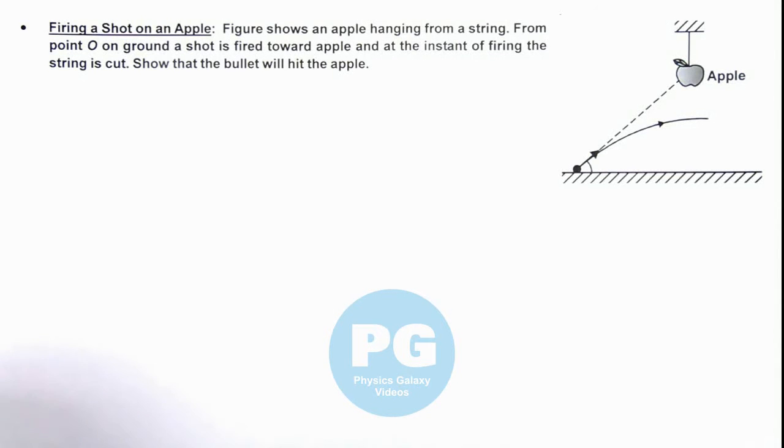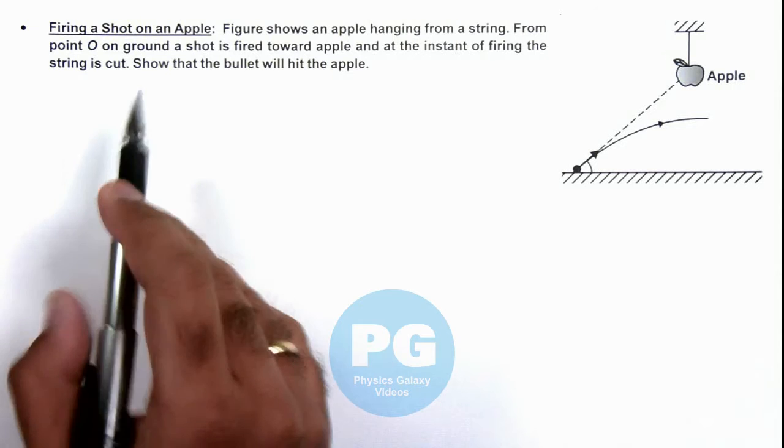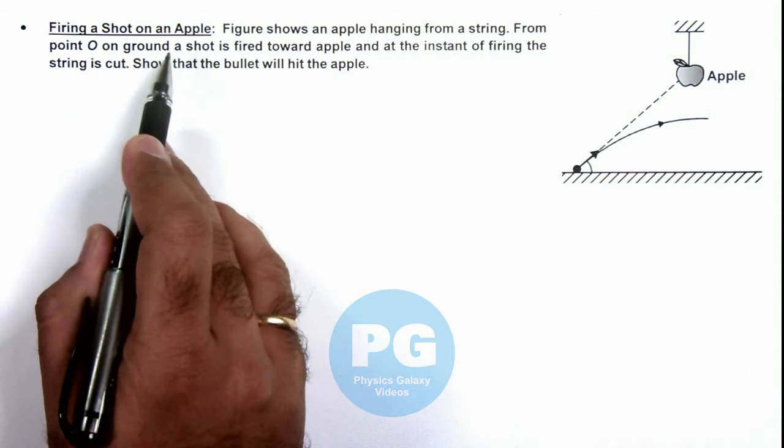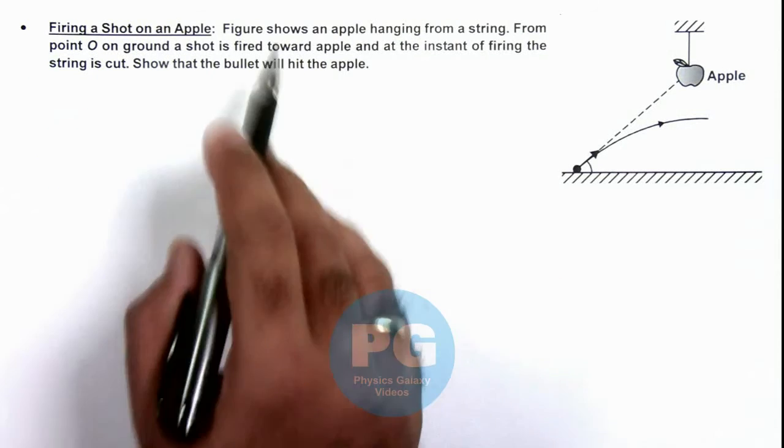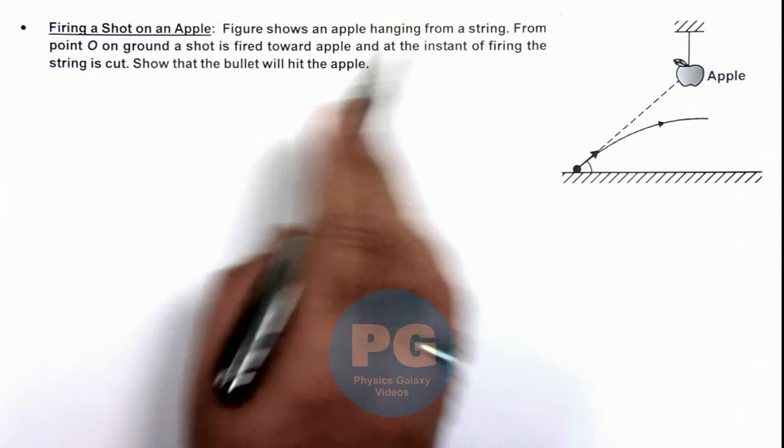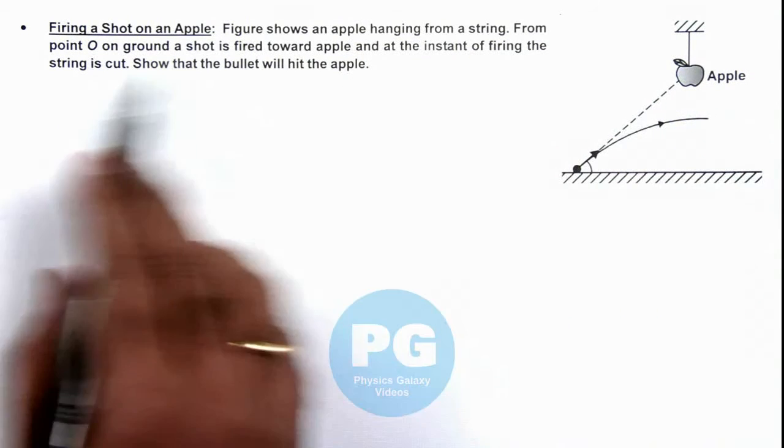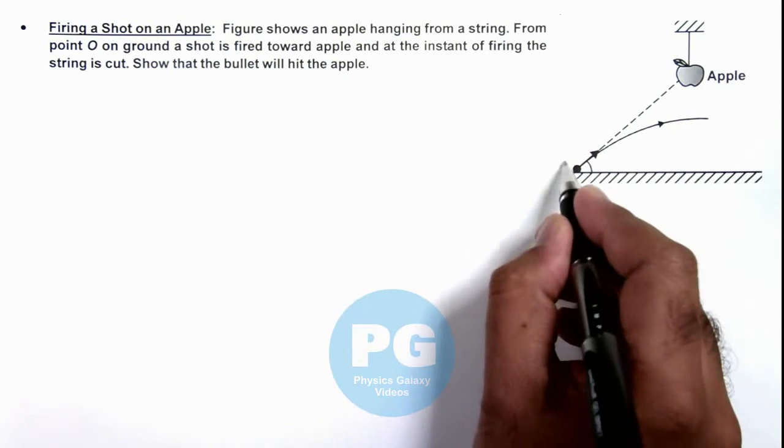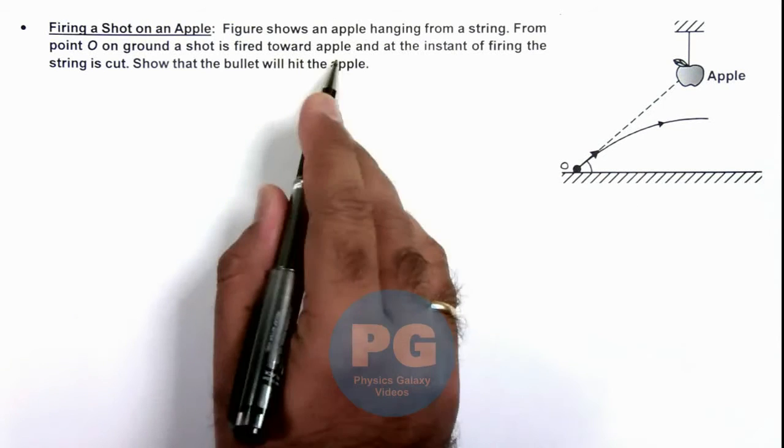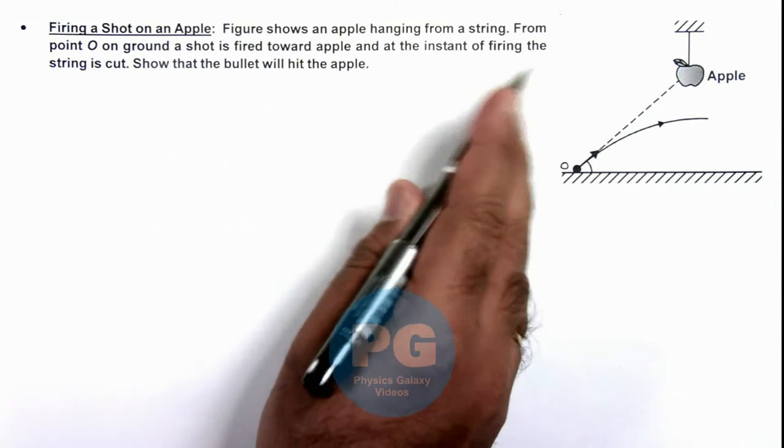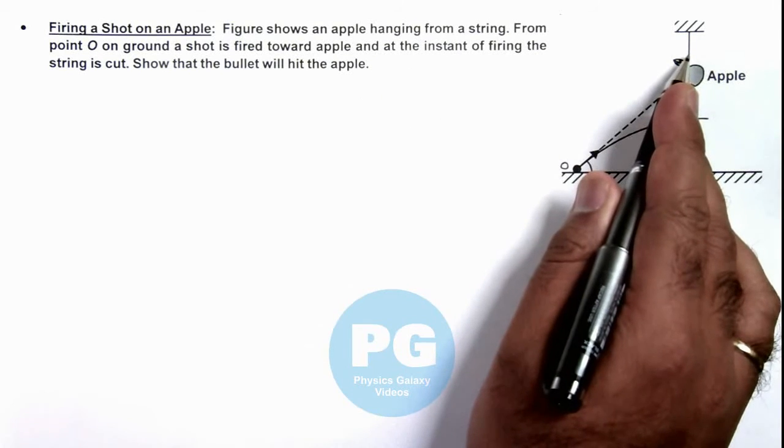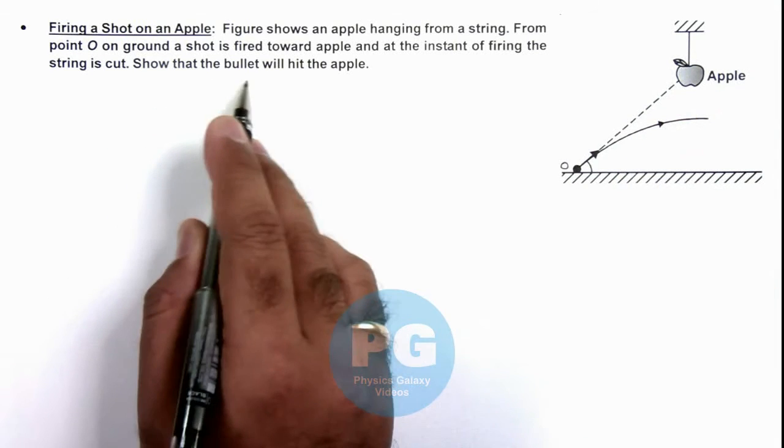This illustration describes a situation of firing a shot on an apple. We are given that the figure shows an apple hanging from a string, and from point O on ground, a shot is fired toward the apple. At the instant of firing, the string is cut. We are required to show that the bullet will hit the apple.